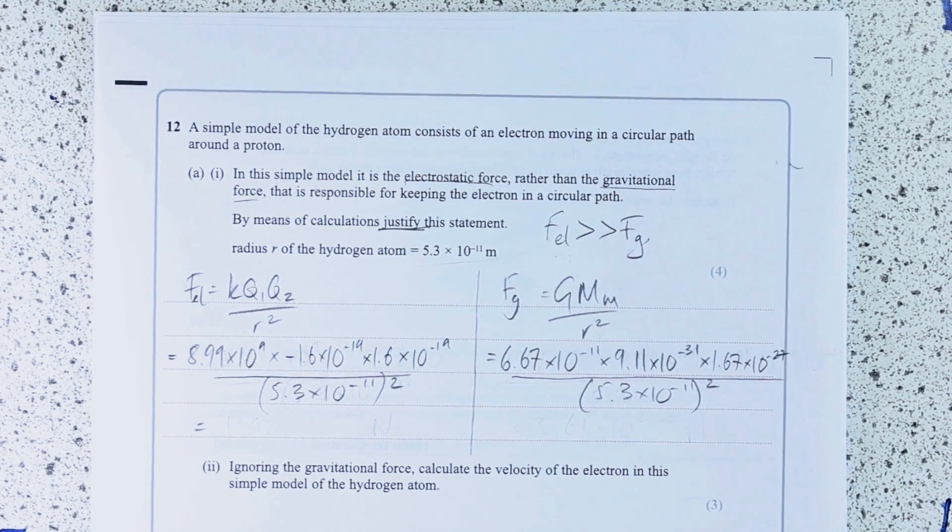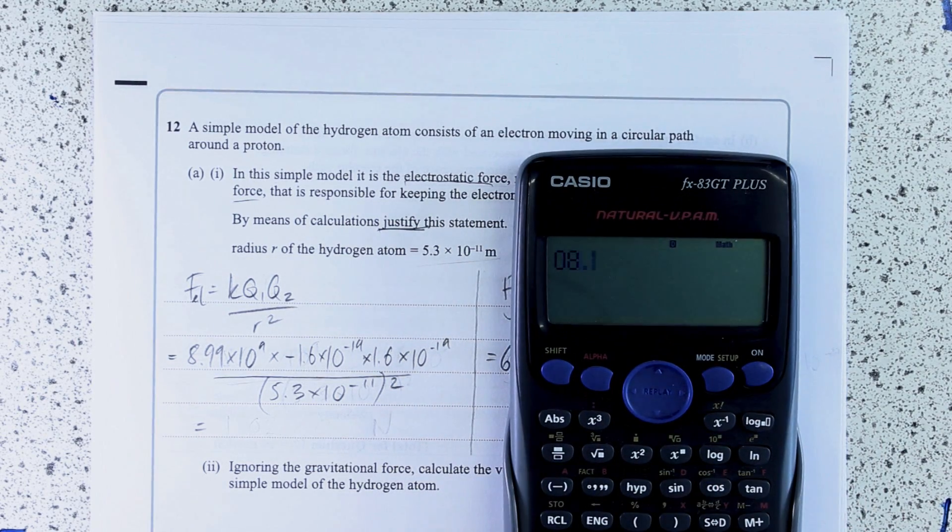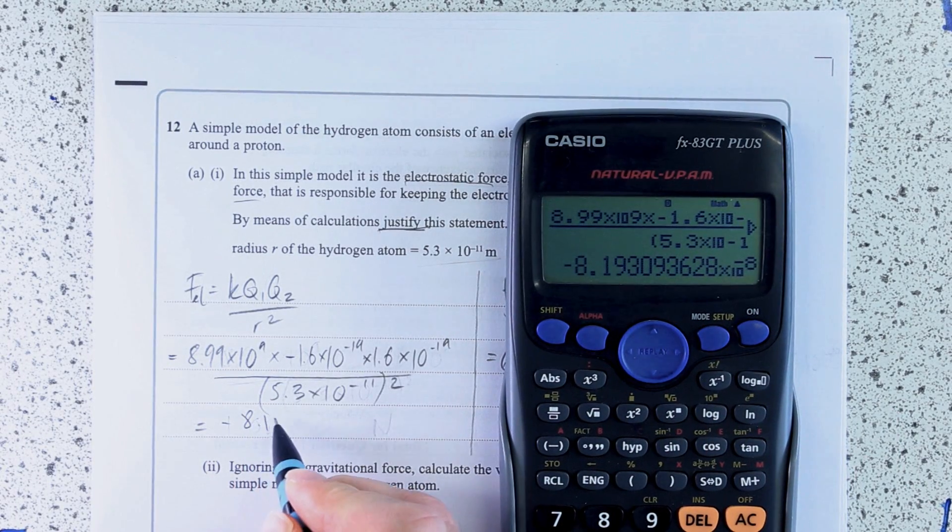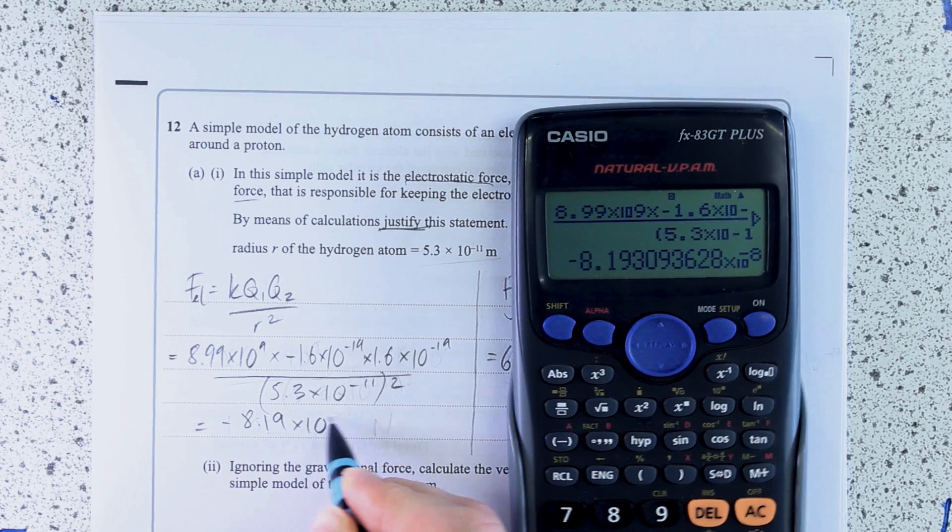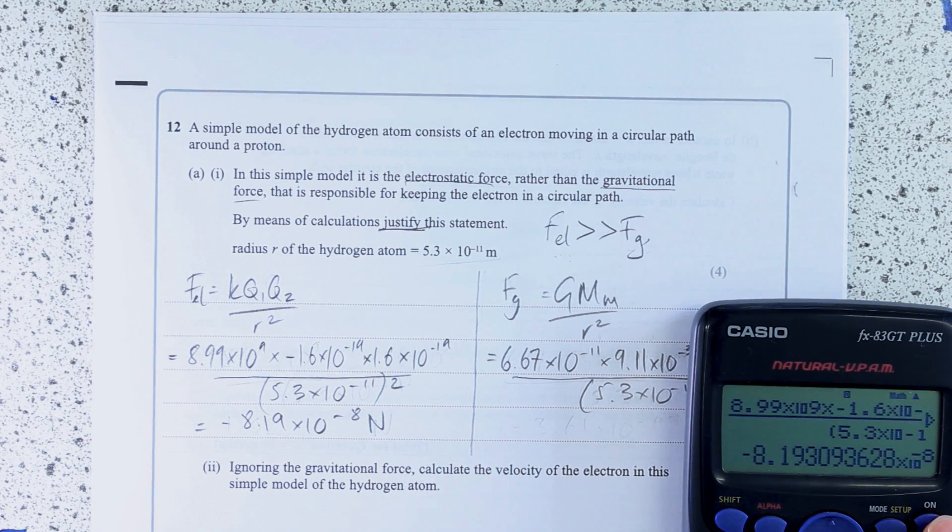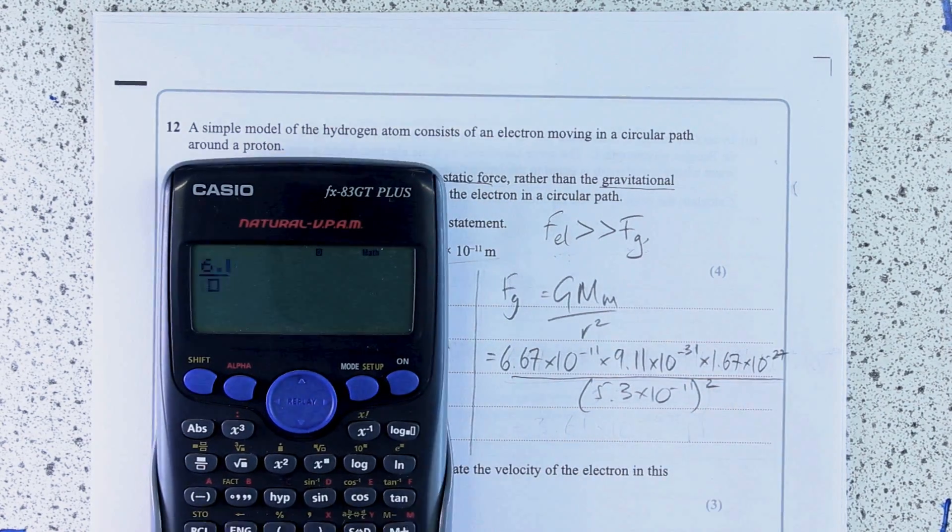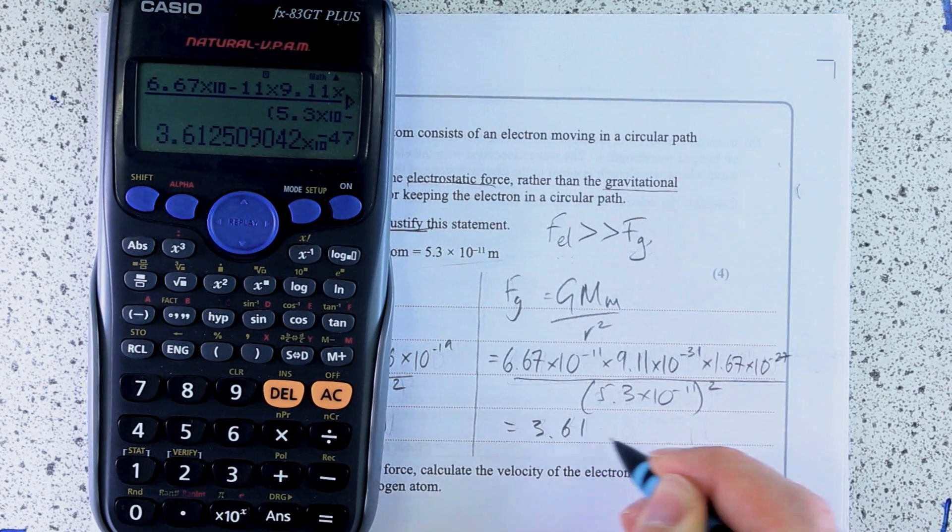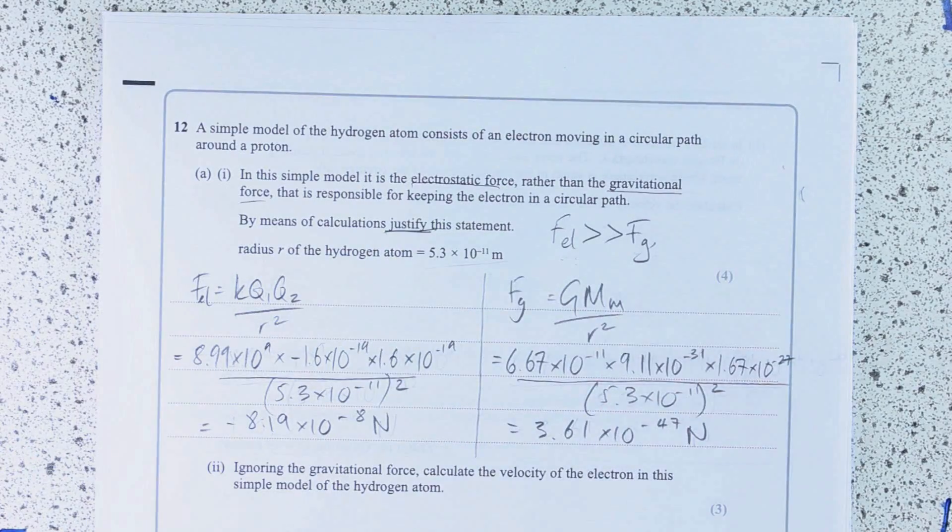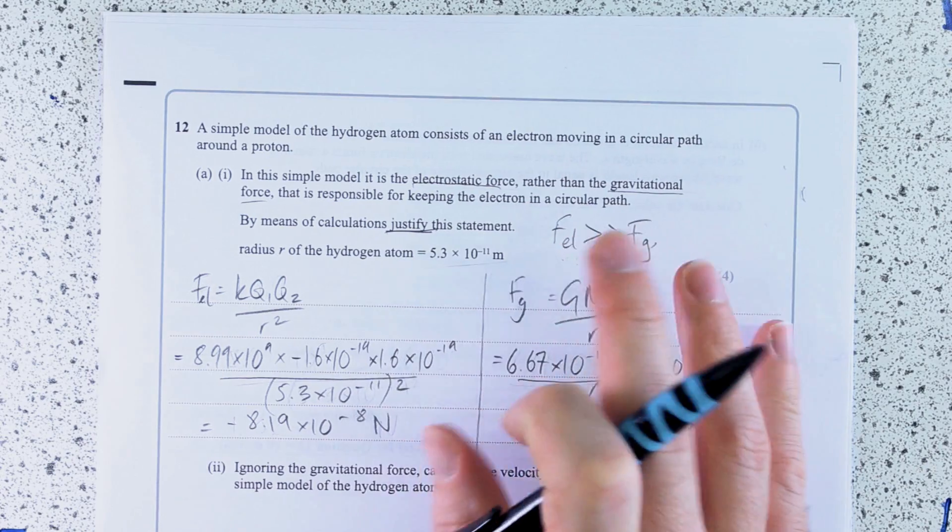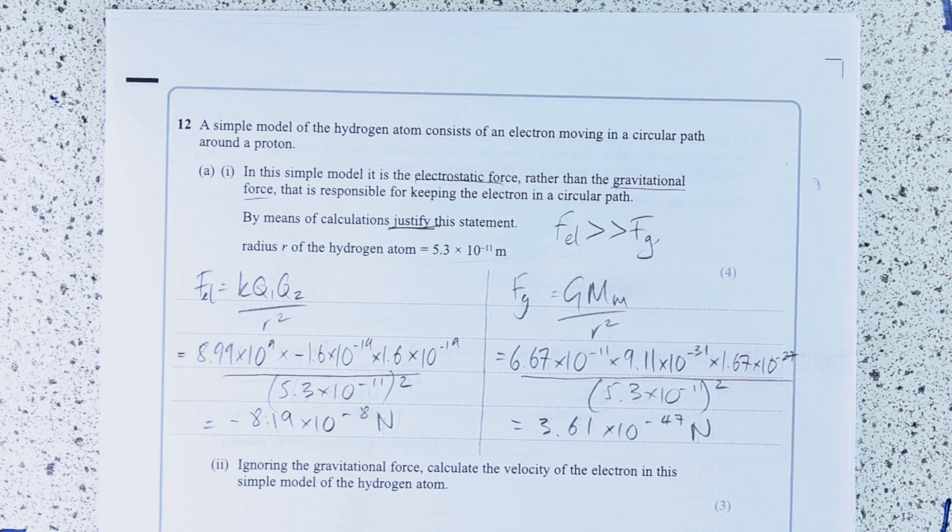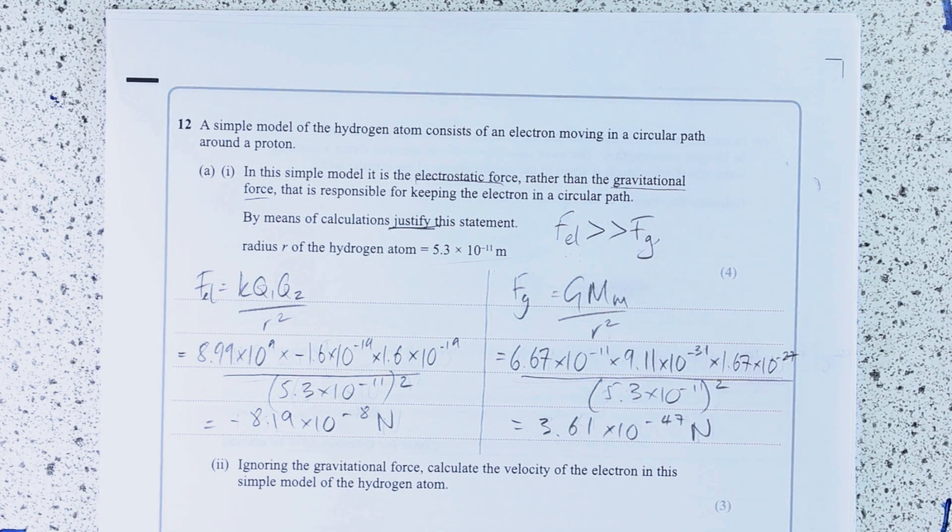So put those numbers through the calculator. Minus 8.19 times 10 to the minus 8 newtons. Something that seems about sensible. It's quite small because we're just talking about one proton and one electron. As you can see, this justifies the statement. My calculations show that actually the electrostatic force is much, much greater than the gravitational force.